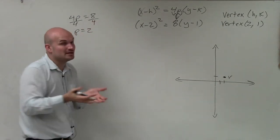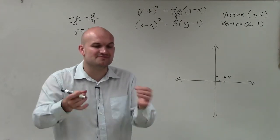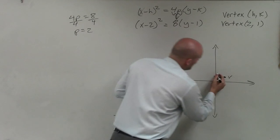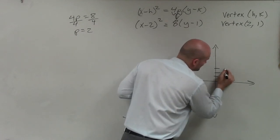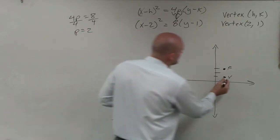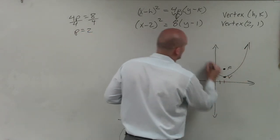Therefore, since p is positive, that tells me the distance from the vertex to the focus is positive 2. Therefore, I'm going to go up two units to find my focus. And since my focus is above my vertex, I know that my parabola is going to open upwards.